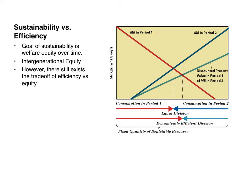There still exists the trade-off of efficiency versus equity. As you know from basic economics, the more one pursues policies that promote efficiency, equity is sacrificed, and vice versa. This two-period model shows the trade-off: consumption in period one versus period two. If it's equal 50-50, then the amount of consumption in period one exactly equals the amount in period two.